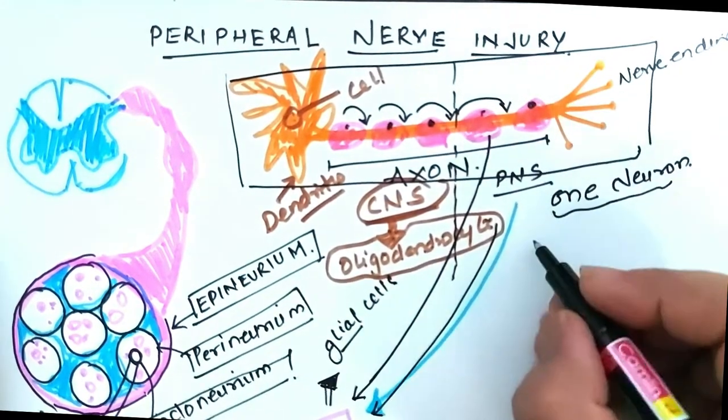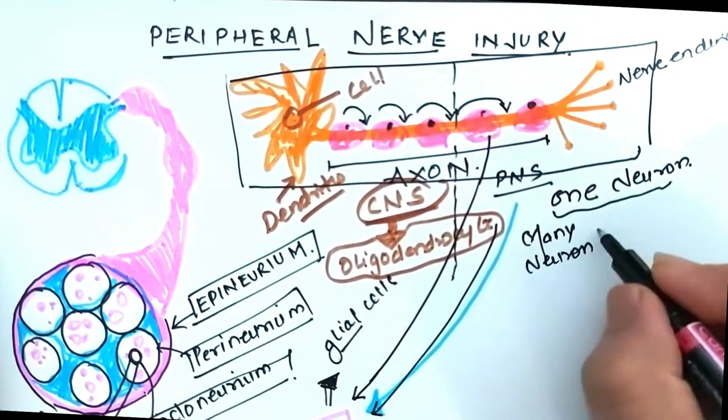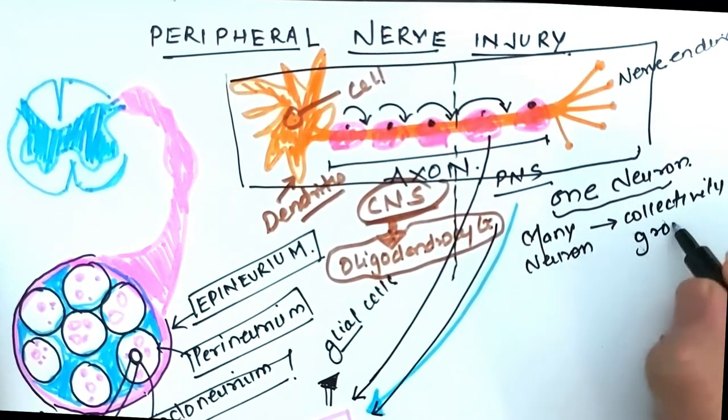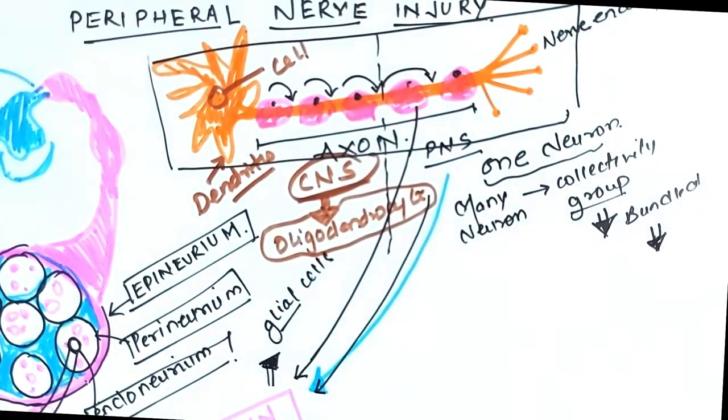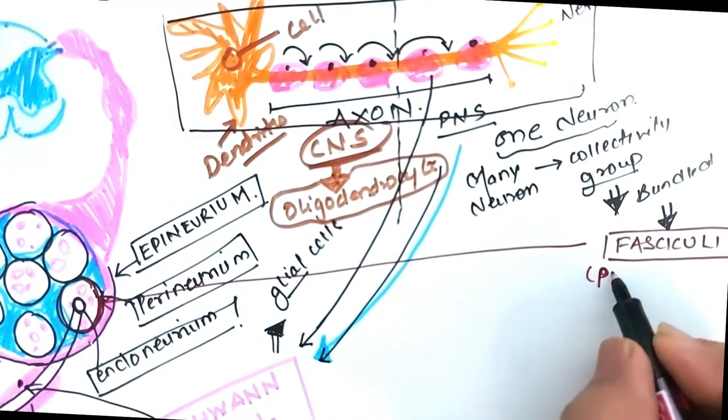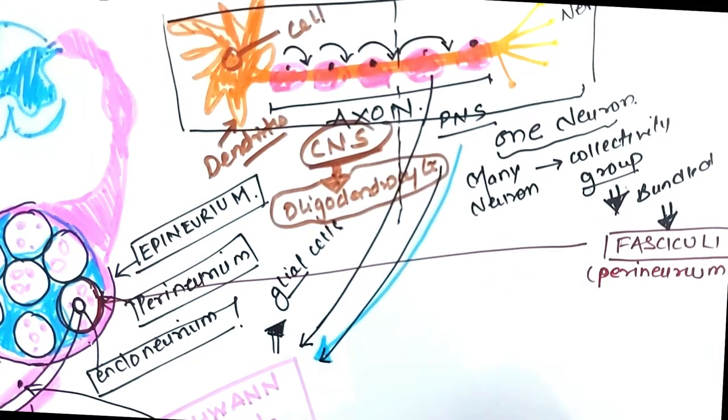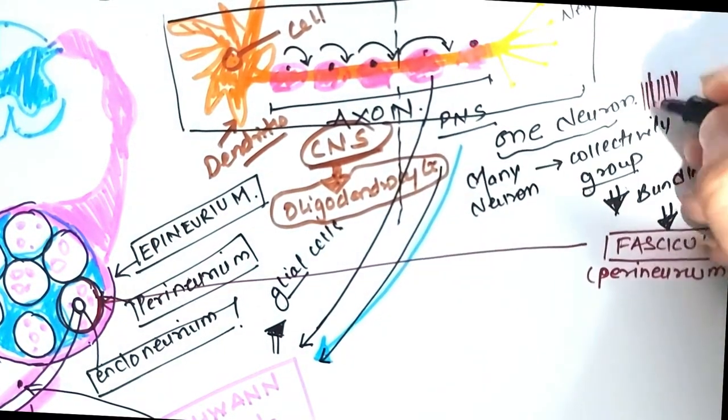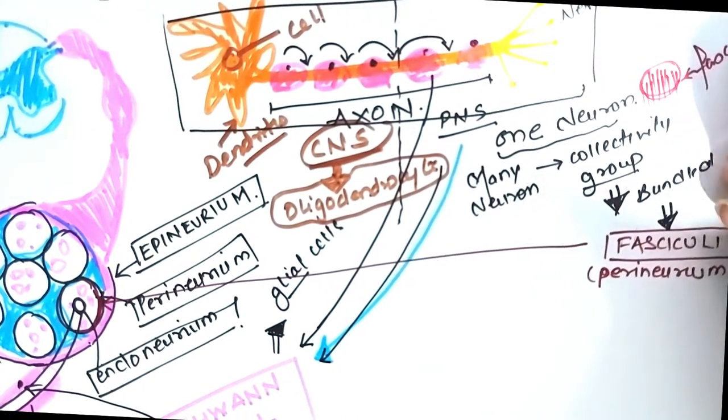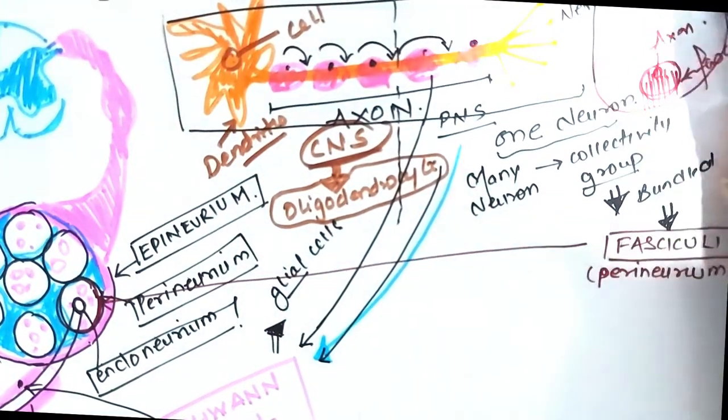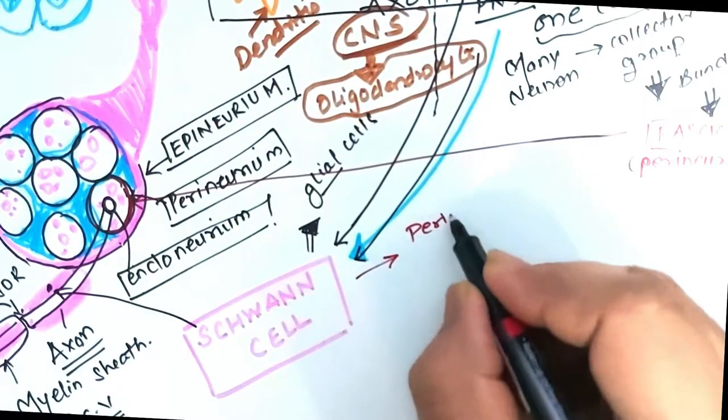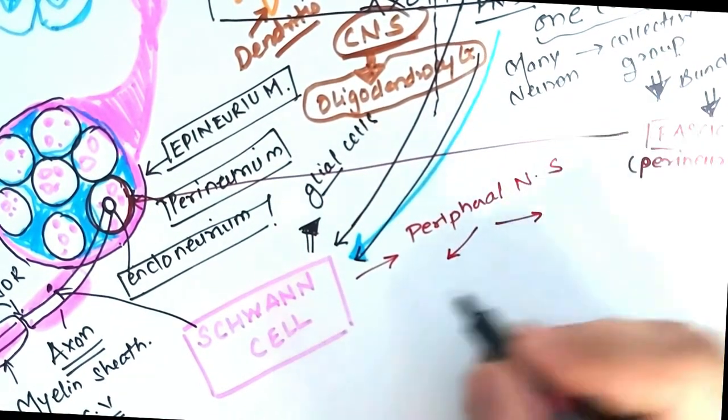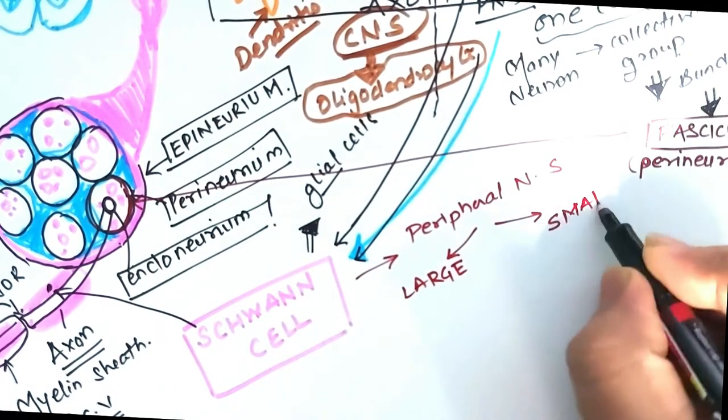So that's the anatomy of one neuron. Many such neurons collectively form a group which are bonded together in one connective tissue, which we discussed was the fasciculi covered by the layer called perineurium. So a group of axons forms fasciculi. Now many such fasciculi are wrapped in connective tissue, the outermost layer that is epineurium.